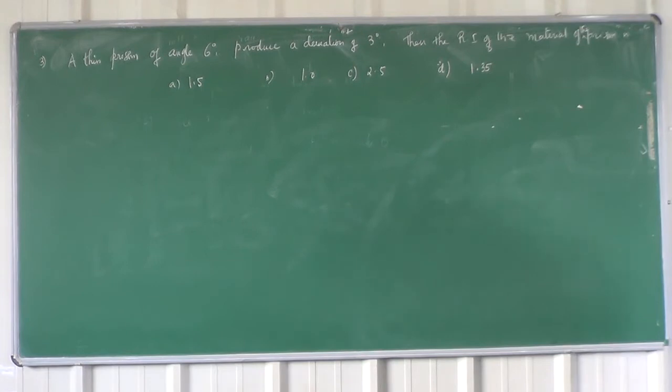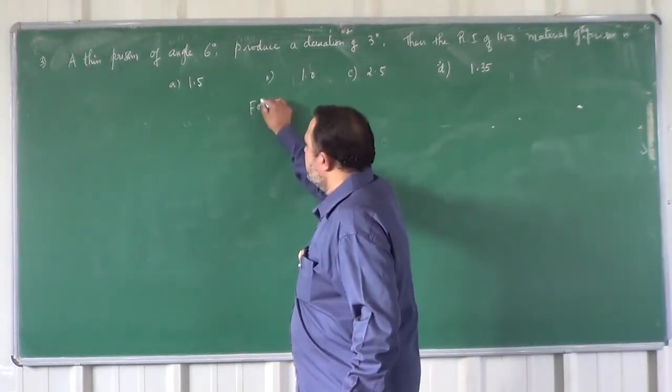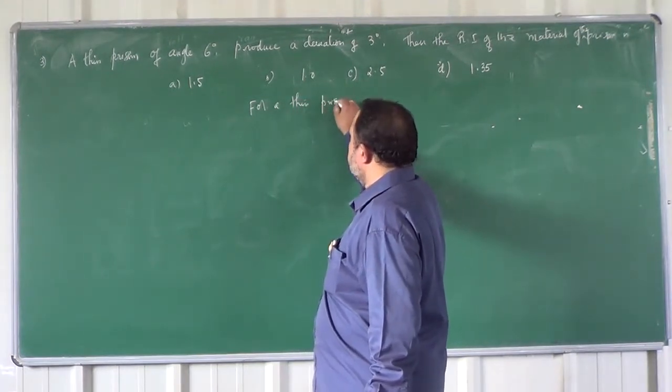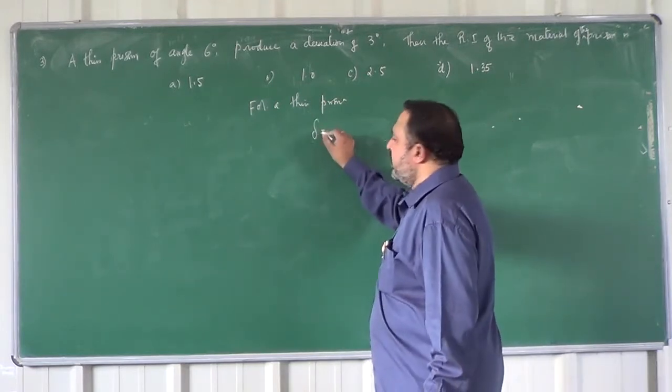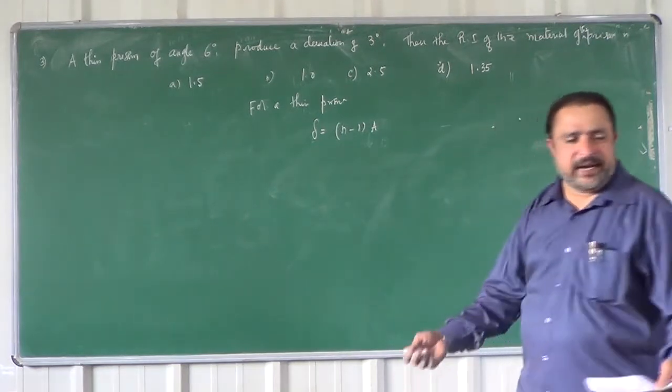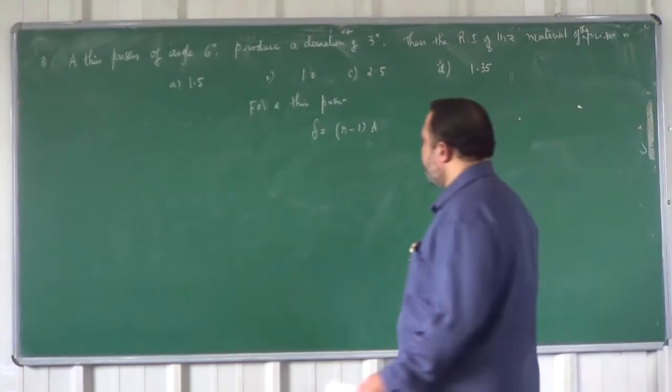Delta is equal to a into n minus 1. For a thin prism, delta equals n minus 1 into a. Delta or d, both are same. d is the angle of deviation or delta is the angle of deviation.